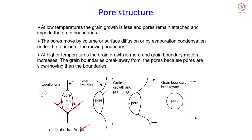At higher temperatures the grain growth is more and therefore the grain boundary motion also increases. As a result it will be difficult for the pores to keep pace with the moving boundaries because now the boundaries are moving faster. Therefore there are chances that the boundaries will break away from the pores, since the pores are slow-moving and find it difficult to keep pace with the fast-moving boundaries. This leads to breaking away of boundaries from the pores.